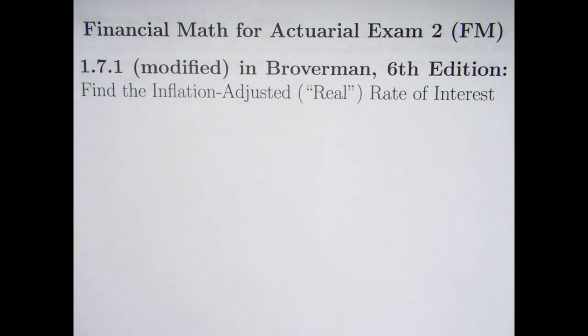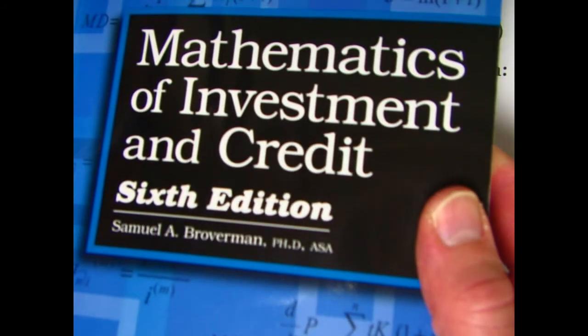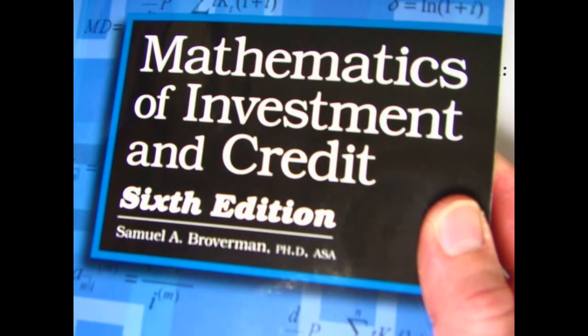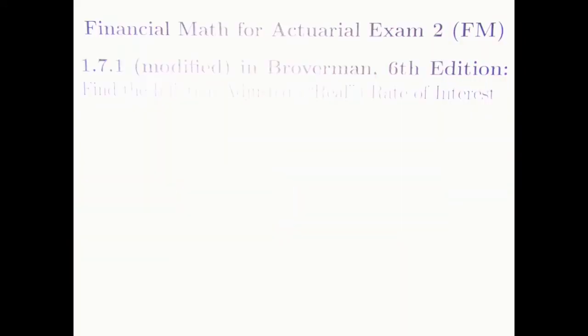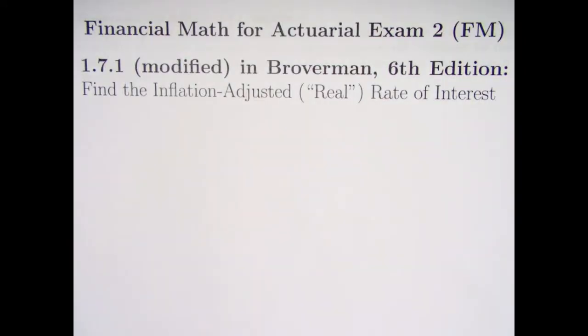Hi. In this video we're going to be taking a look at a problem from section 1.7 of the Mathematics of Investment and Credit, sixth edition by Samuel Broverman. It's about real rates of interest or real rates of return, which means inflation adjusted. Now in this section there are no problems that are marked with an S, there are no old exam problems, but it's still something you should know for actuarial exam 2 anyway, so it's still worth doing.